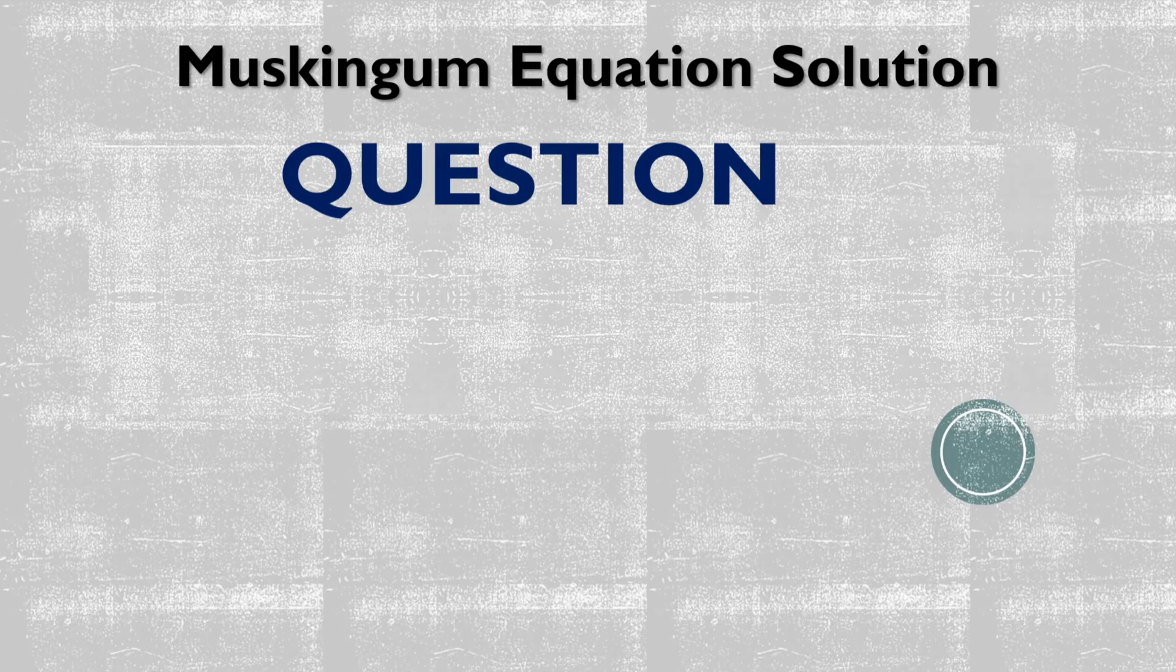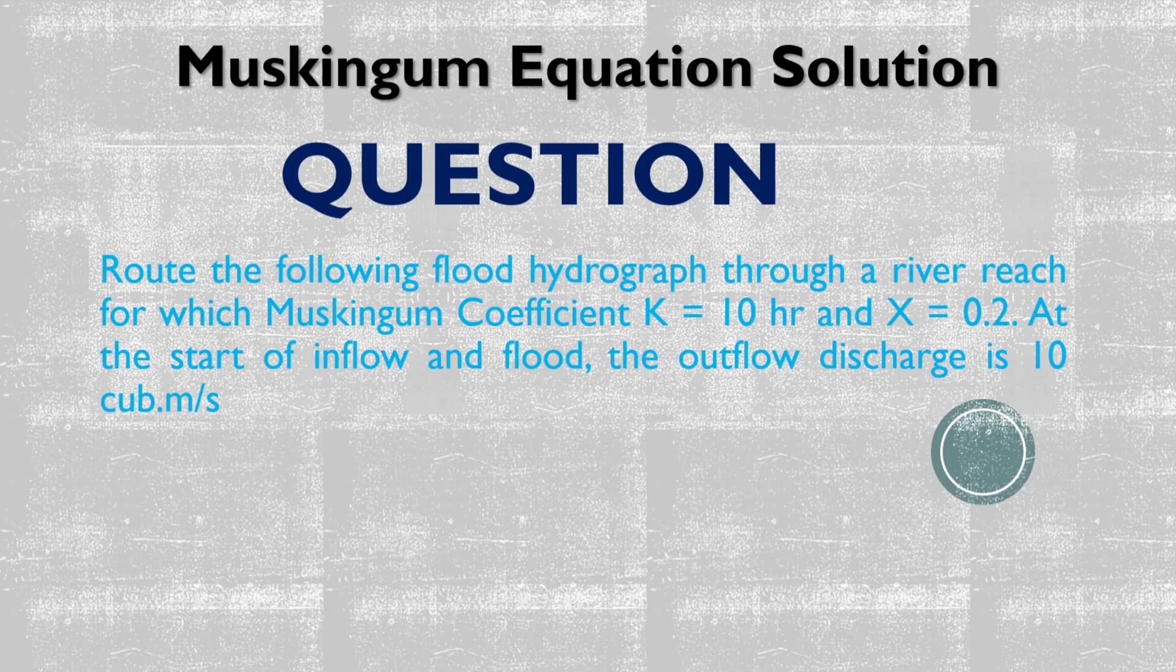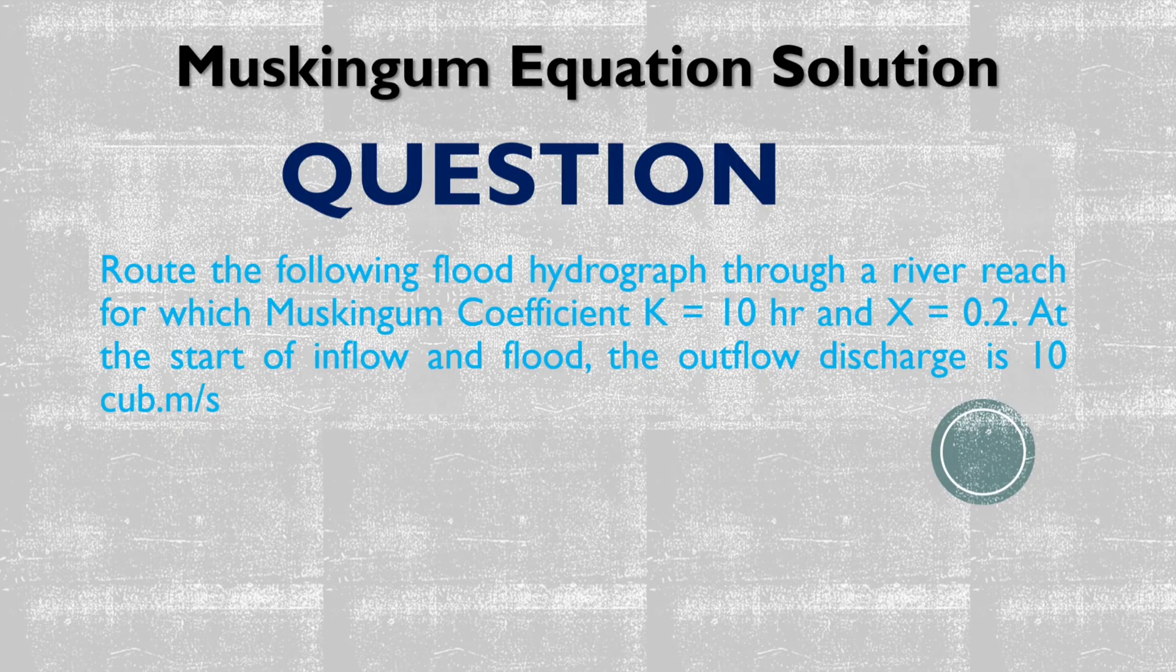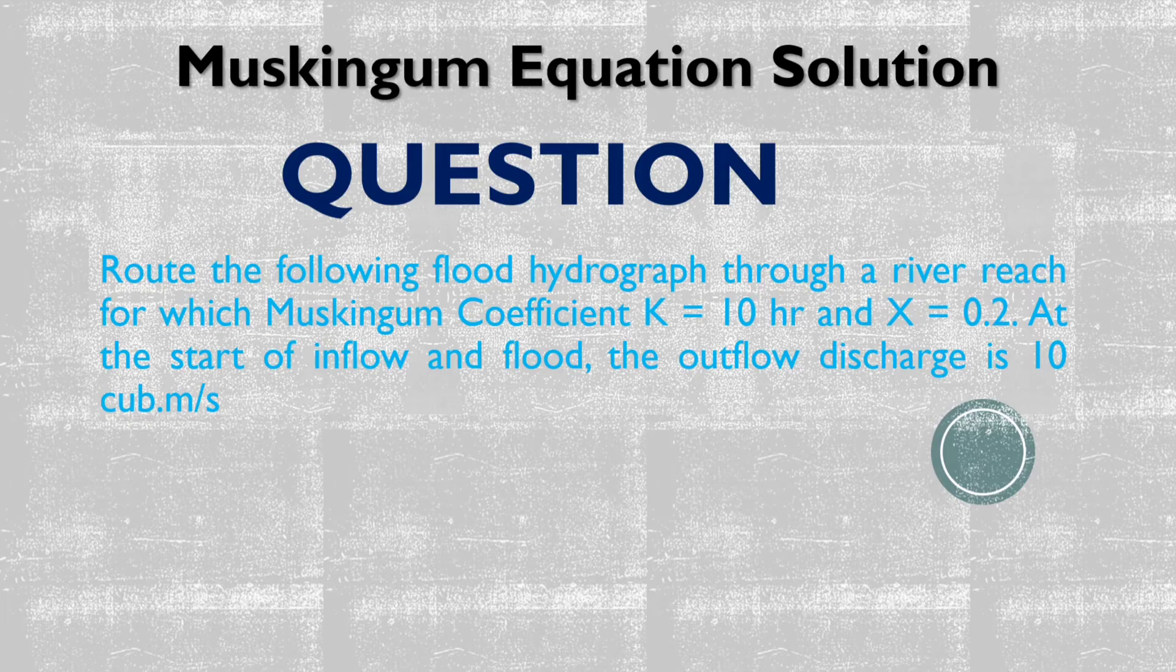The question is: route the following flood hydrograph through a river reach for which Muskingum coefficient K equals 10 hours and X equals 0.2. At the start of inflow and flood, the outflow discharge is 10 cubic meters per second.